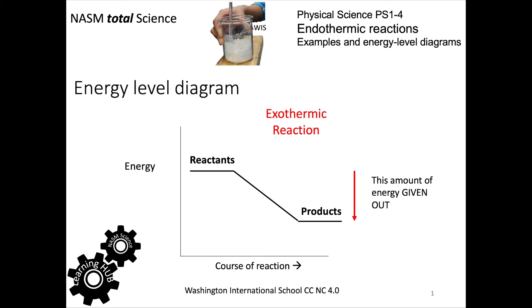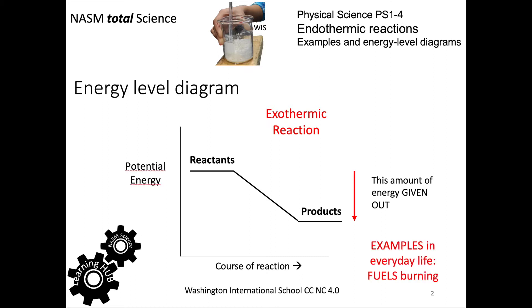We're going to look at an exothermic reaction, where the energy of the products is lower than the energy of the reactants. The difference between the two is the energy given out, so heat is evolved in an exothermic reaction. Examples in everyday life include fuels and burning.